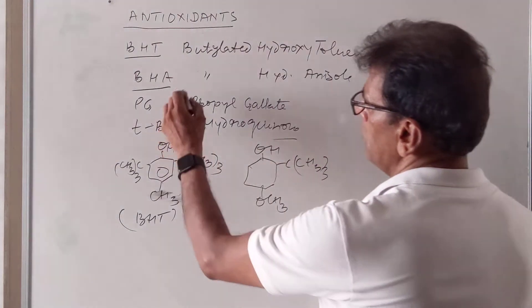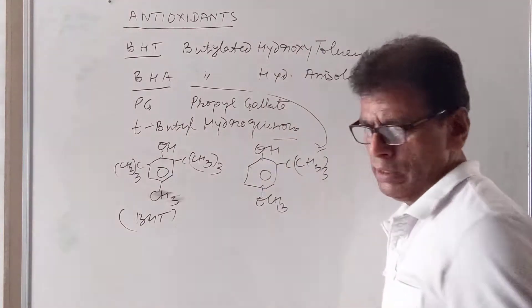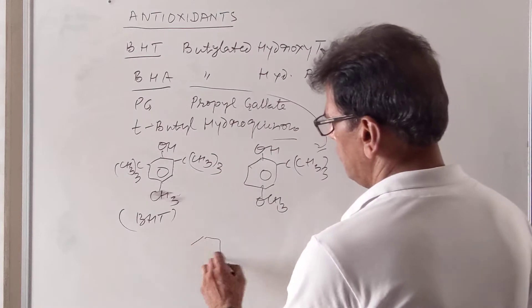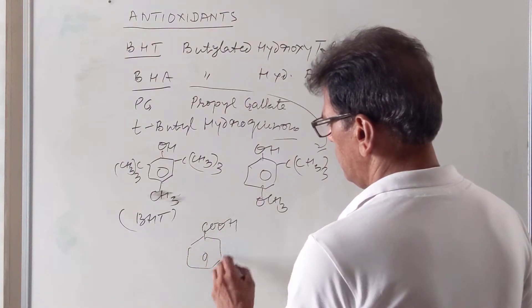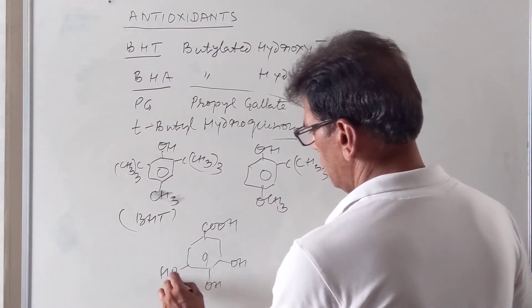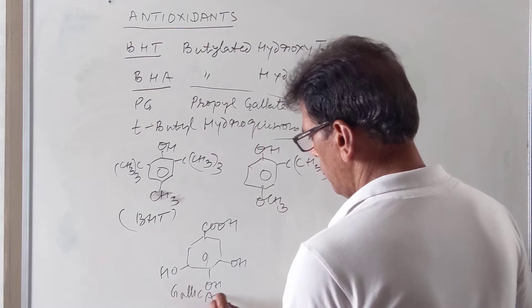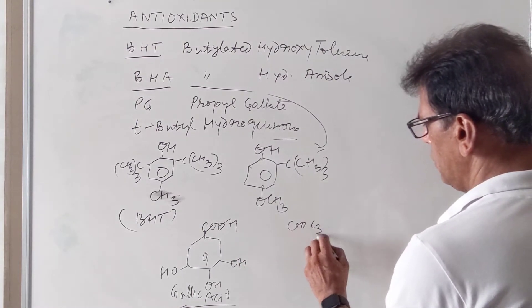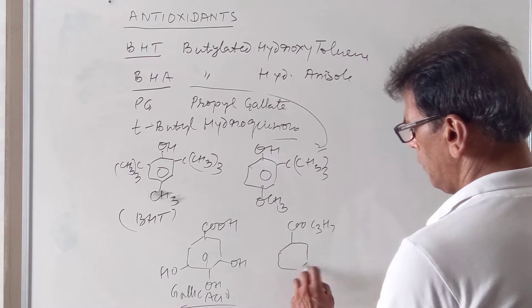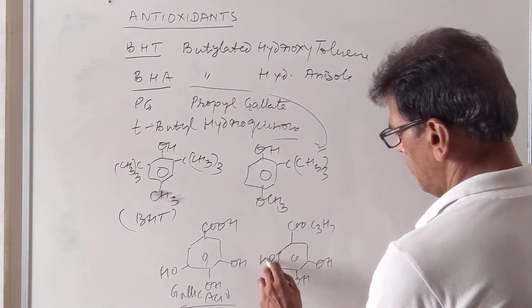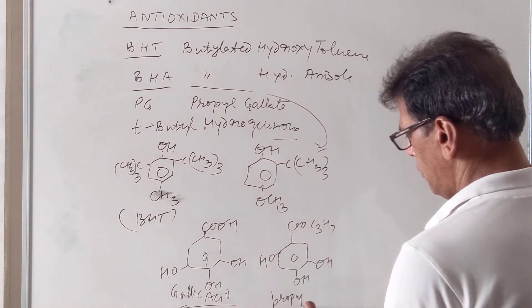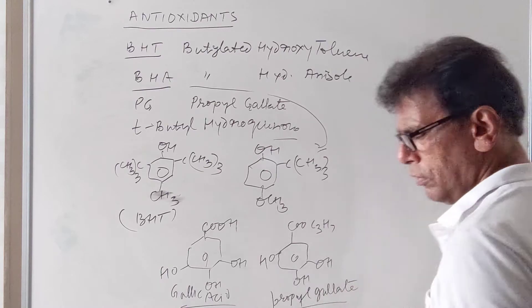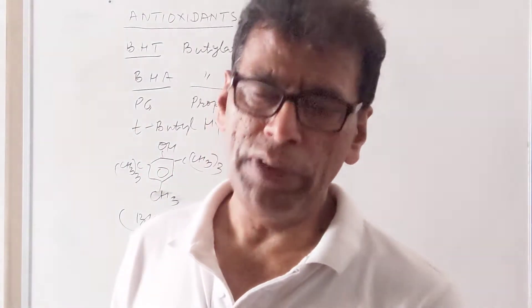The second antioxidant is BHA, Butylated Hydroxyanisole. Then we have gallic acid, followed by its derivative Propyl Gallate. The addition of BHA to butter increases its storage life.